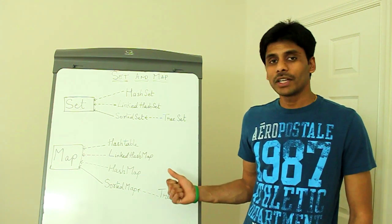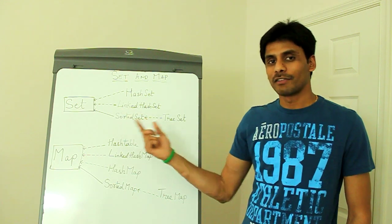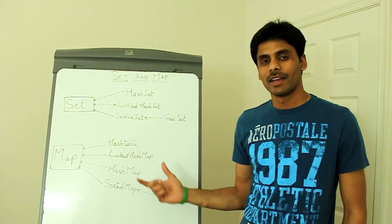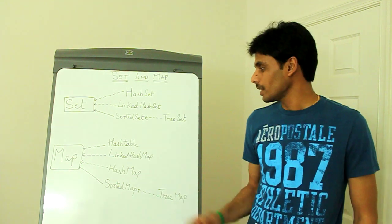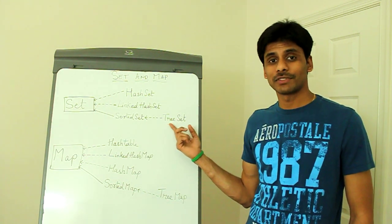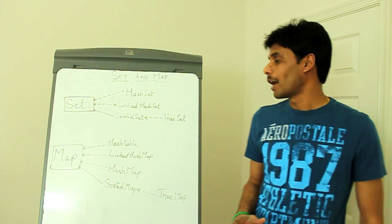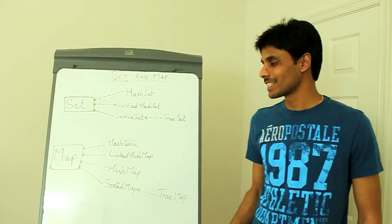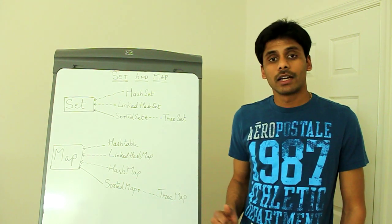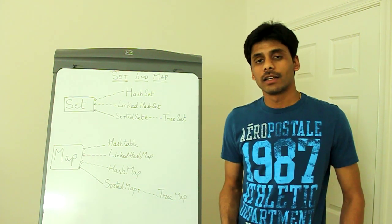As you can notice, if it's a LinkedHashSet, a LinkedList, or a LinkedHashMap, it is ordered. If a class name starts with Tree, then it is sorted. That's how easy it is to remember these classes.